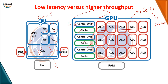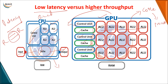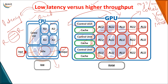CPUs are generally used for low latency applications. Latency is the time gap between a request and a response. Throughput is the number of instructions or programs executed in unit time. When you want higher throughput — more instructions executed in less time — we rely on the GPU. When you want a quicker response (low latency), we use the CPU. So CPUs are for low latency and GPUs are for higher throughput.